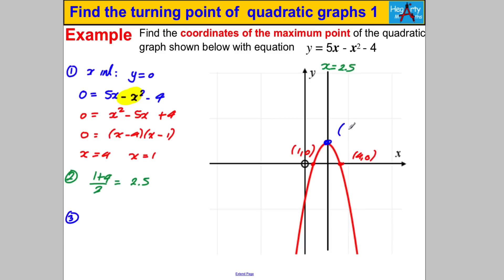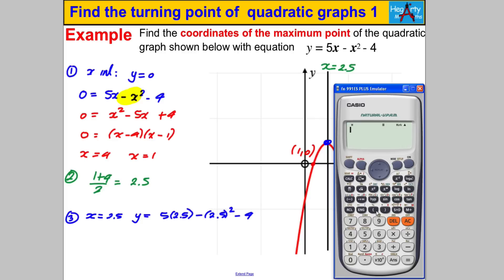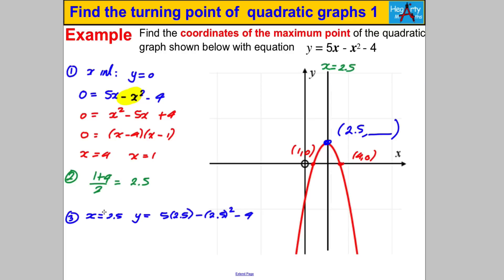The last step: substitute x = 2.5 into the original equation y = 5x - x² - 4 to find the matching y-value. On the calculator: 5(2.5) - (2.5)² - 4 = 9/4 = 2.25. So y = 2.25, and the coordinates of the maximum turning point are (2.5, 2.25). That's it for this video — thanks very much for watching.